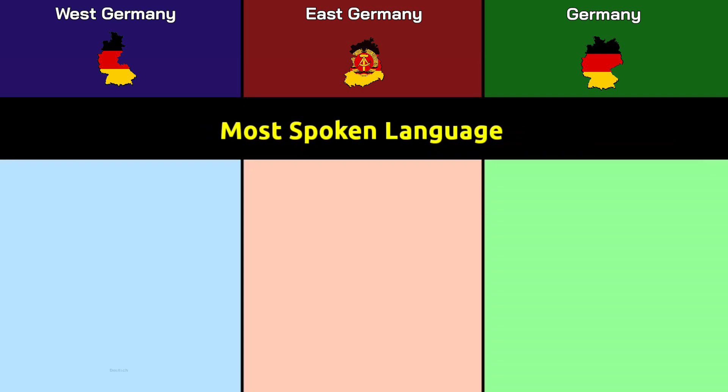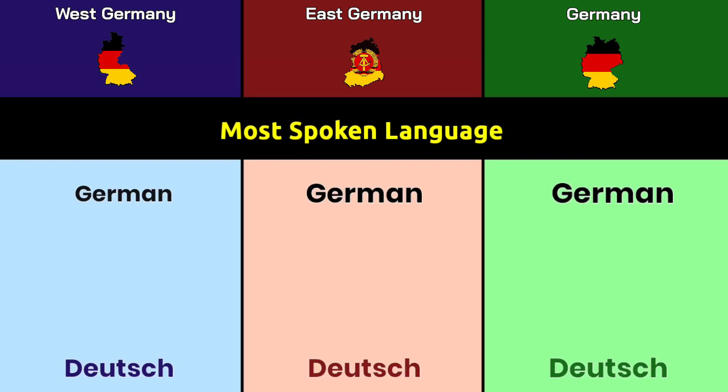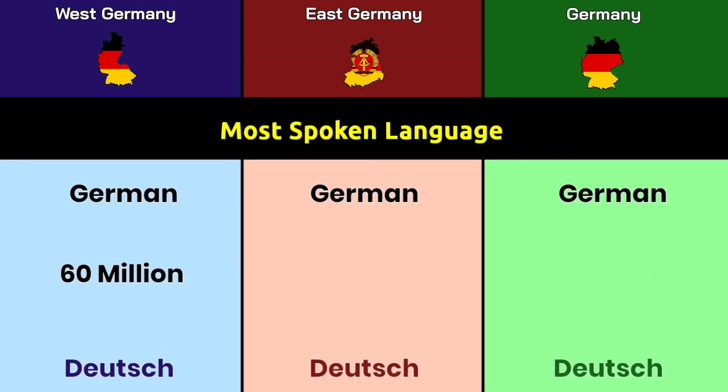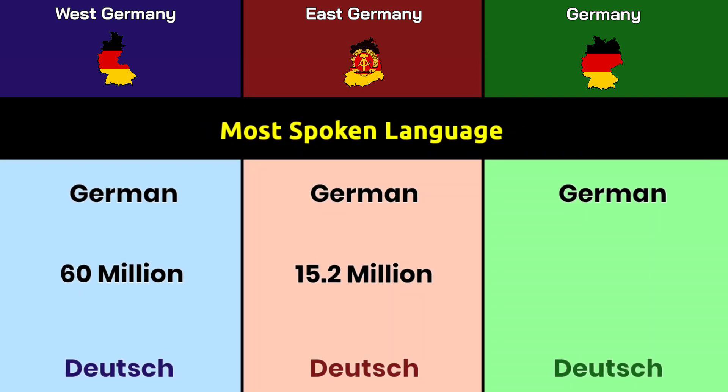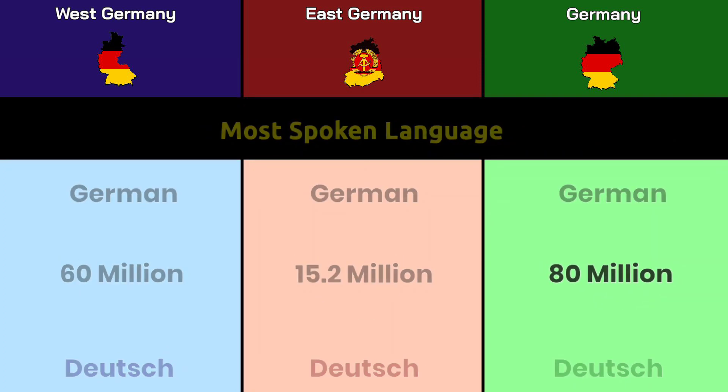Most spoken language: German for all regions — 60 million German speakers in West Germany, 15.2 million in East Germany, and 80 million in modern Germany.